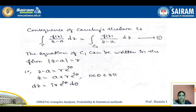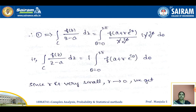C1 is the equation of the circle, given by modulus of z minus a equals r, where a is the center and r is the radius. We can simplify: z minus a can be written as r times e to the power i theta. So z equals a plus r times e to the power i theta. On the circle C1, theta varies from 0 to 2 pi, i.e., 0 to 360 degrees. Differentiating z gives dz equals i r e to the power i theta, with respect to theta. This data we substitute in equation number 1.